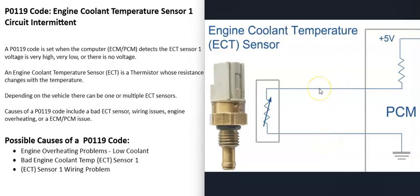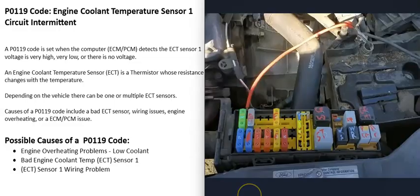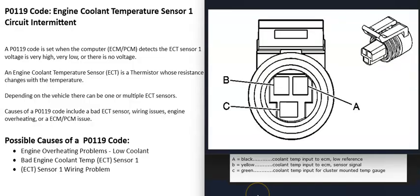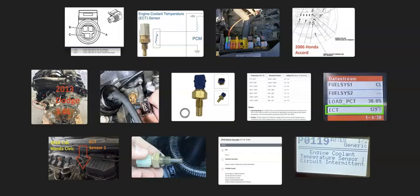With a multimeter, you can verify you're getting five volts to the sensor and also test the signal wire going back to the computer. It's also a good idea to check for any blown fuses or a bad relay. This can vary depending on the vehicle, but wiring issues with the ECT sensor number one circuit are a common cause of the P0119 code. That's basically a general overview of how you go about diagnosing and fixing this code.